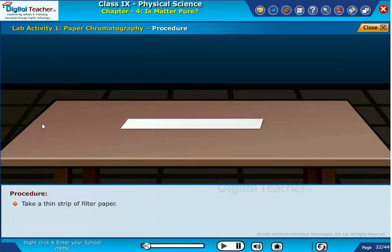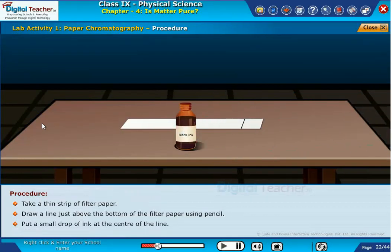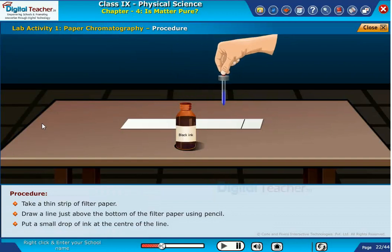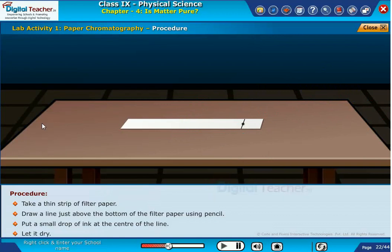Take a thin strip of filter paper. Draw a line just above the bottom of the filter paper using a pencil. Put a small drop of ink at the center of the line. Let it dry.